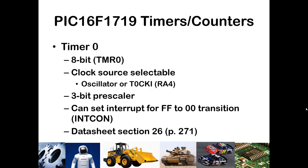Within the PIC-16F1719, there are several timers and counters. We will primarily be focusing on Timer 0 and Timer 1. Timer 0 is an 8-bit timer which uses the TMR0 register to count the number of clock events. You can also use it as a counter by using the T0CKI — timer 0 clock input pin — which is the same as pin RA4.